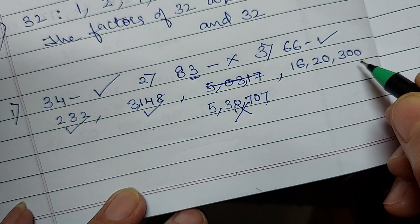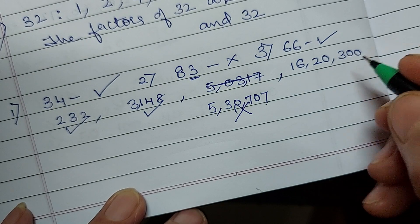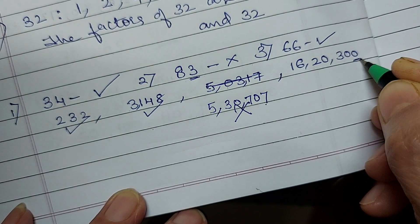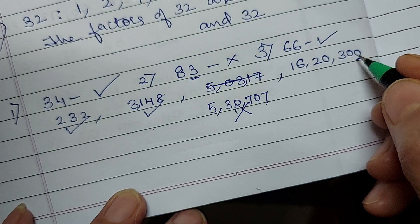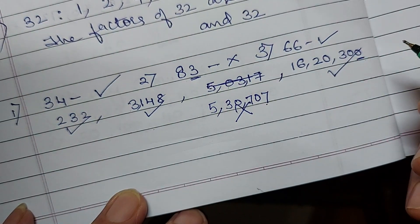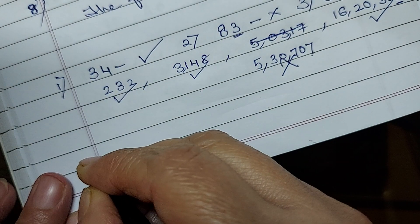If it is even, it is divisible. Now you can see the number, 16,20,300. So are you going to divide this? No. Just by looking at the number, see the last digit in the units place. If it is an even number, it is exactly divisible by 2. Got it?